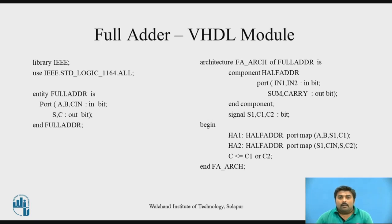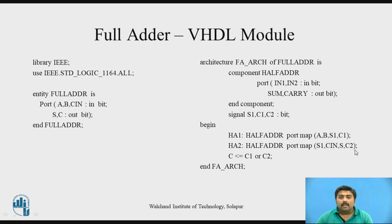After architecture begin, write the component instantiation. HA1 is the first component instantiation — component name 'half_adder', with port map connecting A and B to inputs IN1 and IN2, and S1 and C1 to outputs sum and carry. The second component instantiation — 'half_adder', with port map connecting S1 and C1 to inputs IN1 and N2, and S and C2 to the outputs sum and carry. Then the final carry C is obtained by ORing C1 and C2. End architecture.